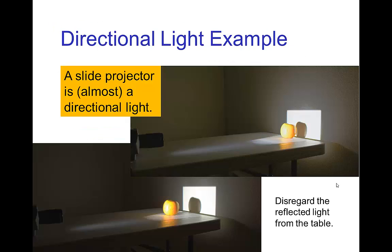An example of something which is approximately a directional light would be a slide projector light. The light that comes out is fairly focused in a straight line, so those rays are mostly parallel. You see the shadow of this apple doesn't change in size as we move its position.